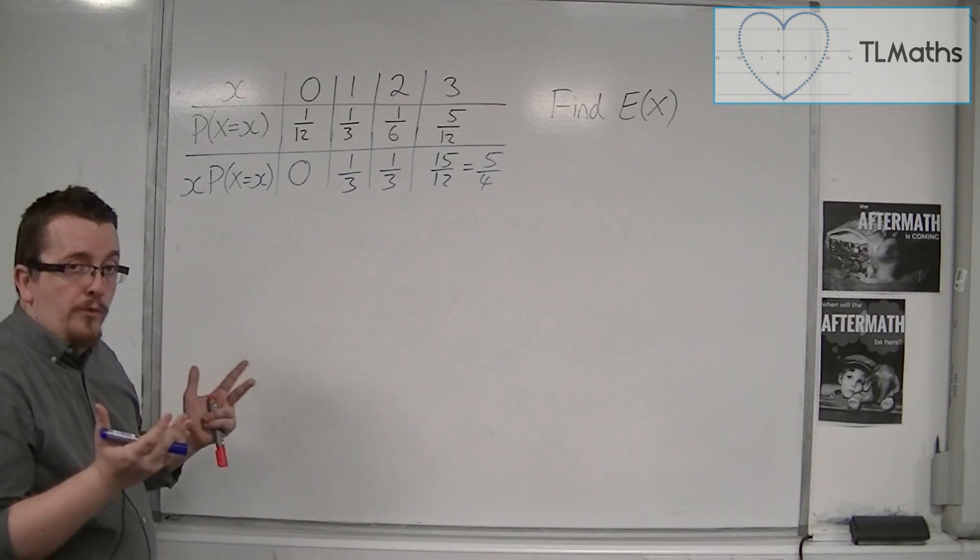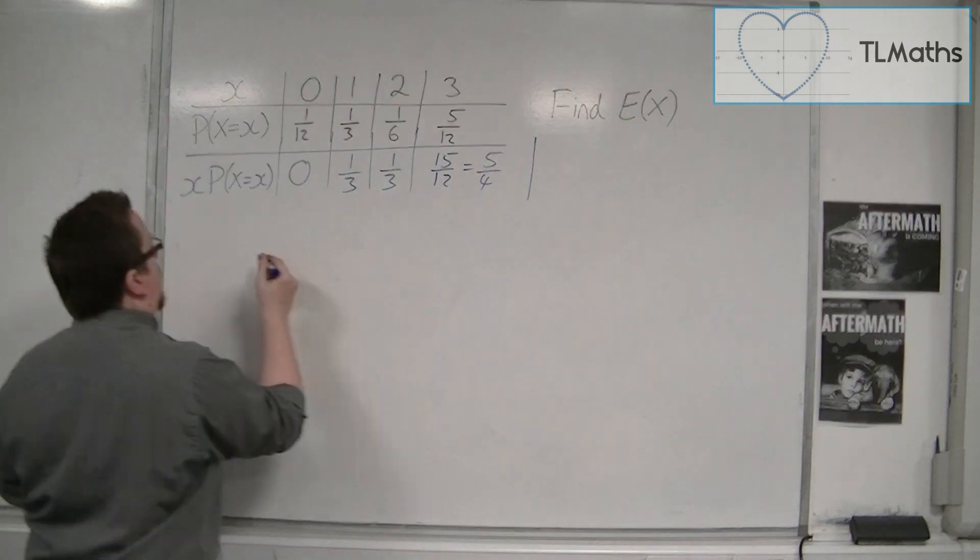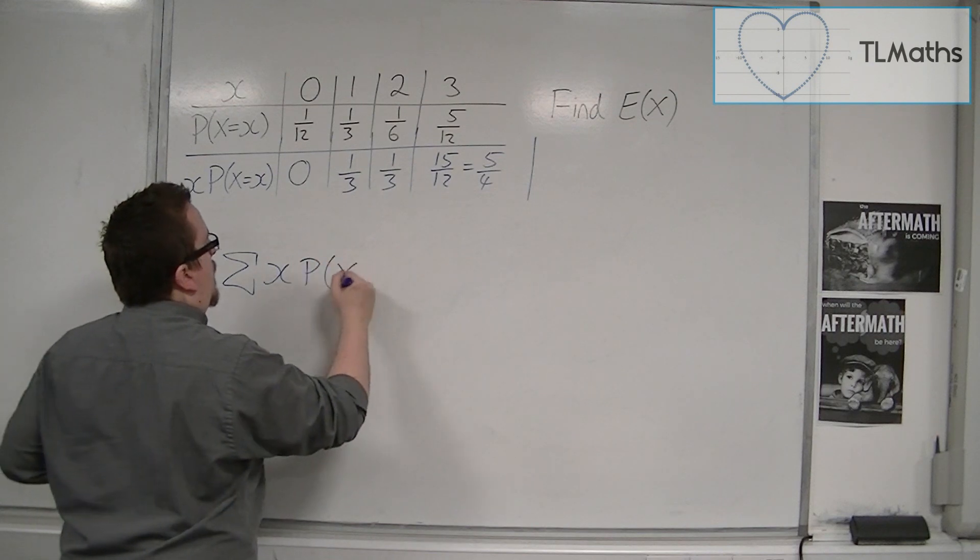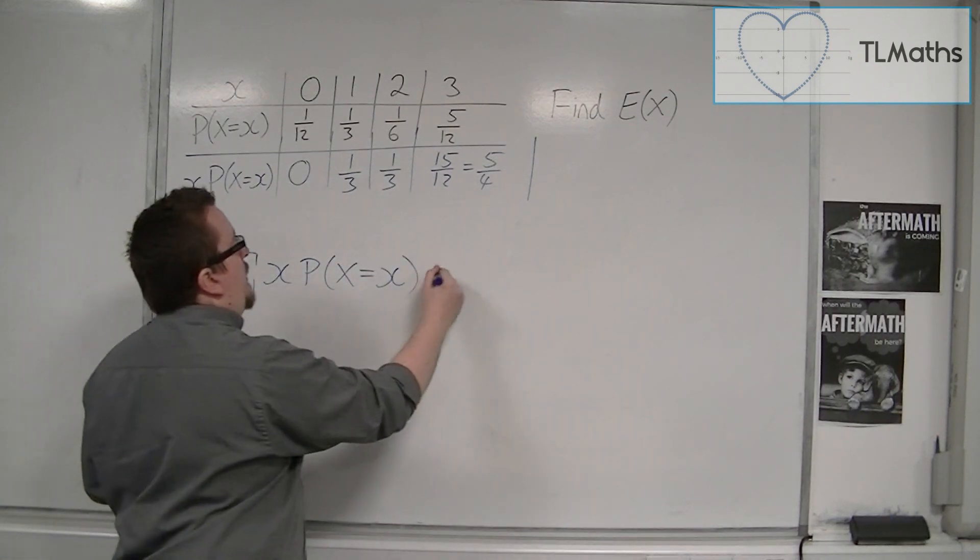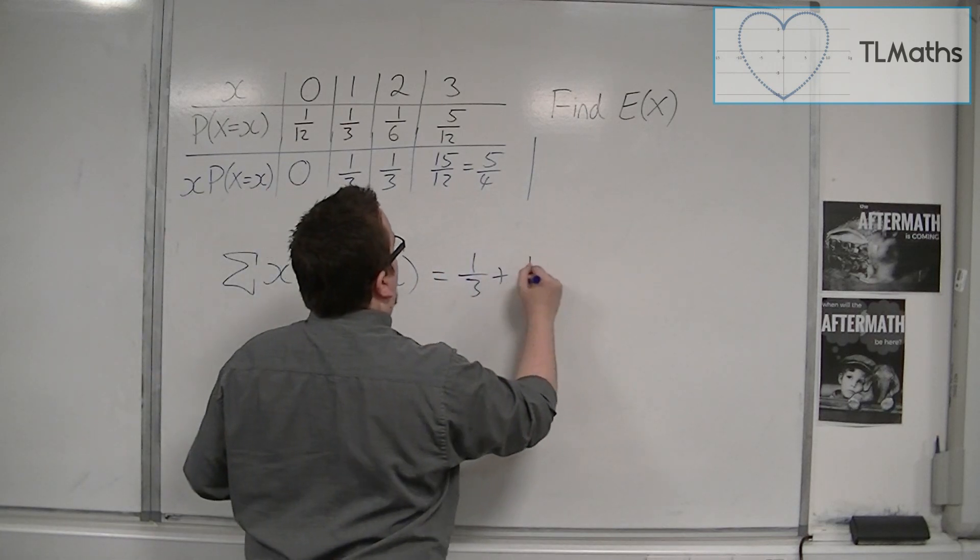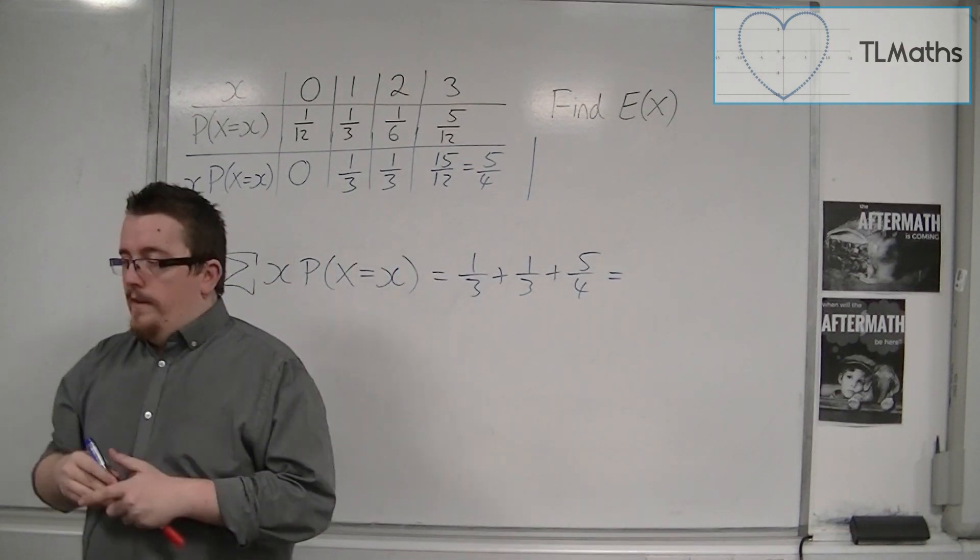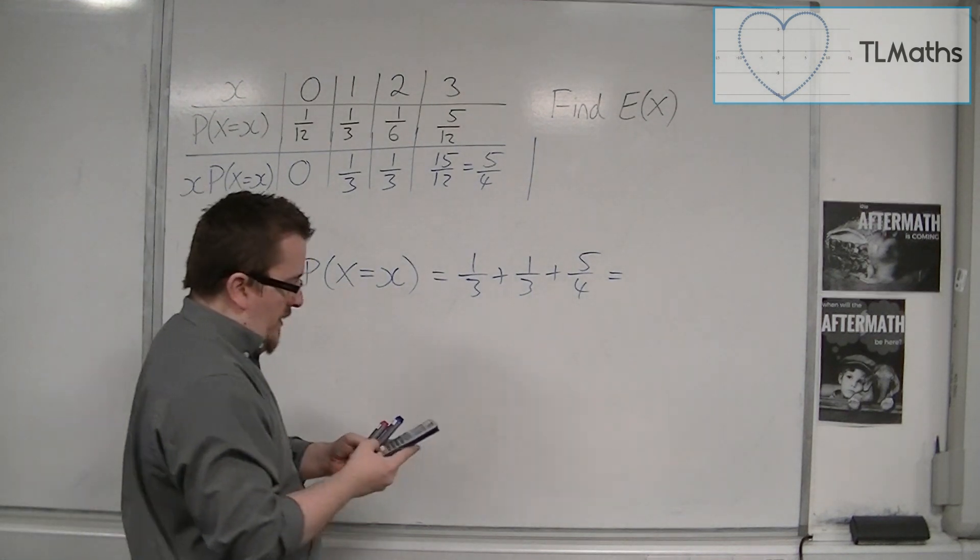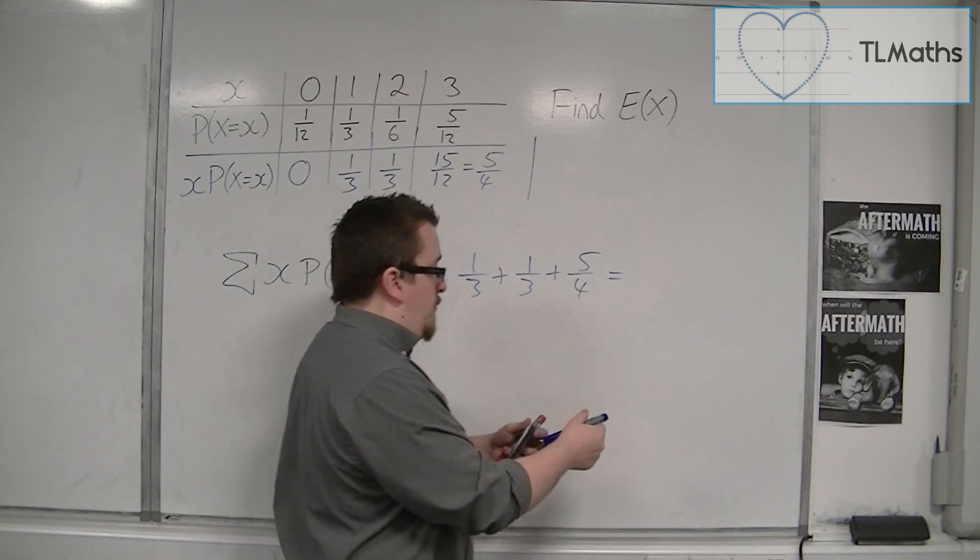You add them all together. So the total, let's write this over here. The sum of all the x's times their probabilities, all the x's times their frequencies, is equal to 1/3 plus 1/3 plus 5/4. Let's get a calculator to do that. So we have 1/3 plus 1/3 plus 5/4, and that's 23/12.